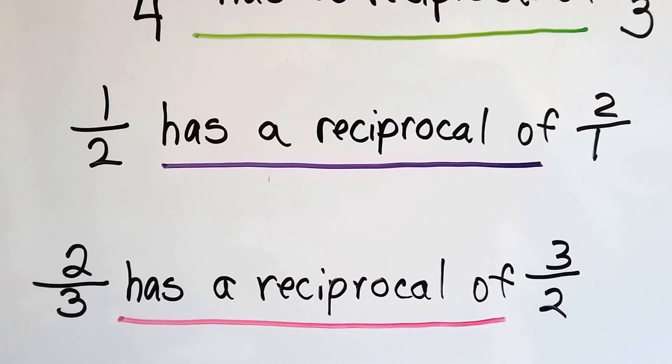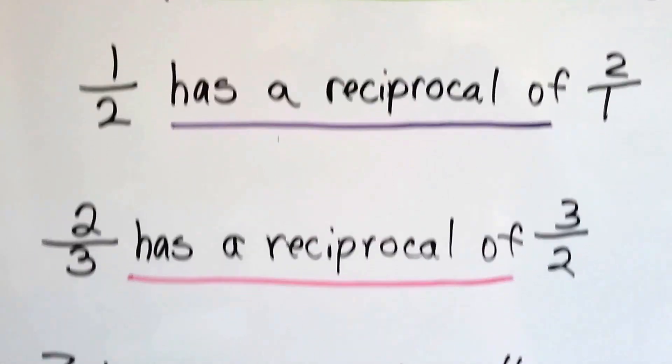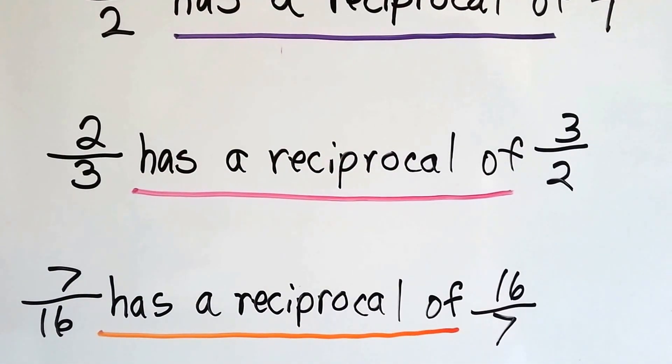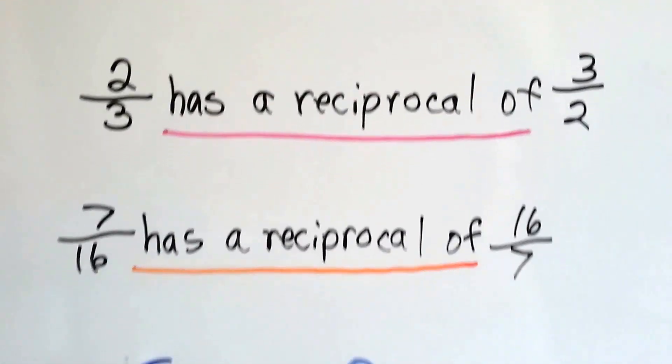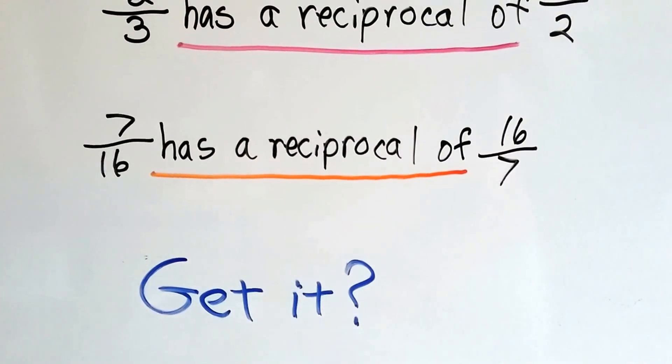Two-thirds has a reciprocal of three-halves. Seven-sixteenths has a reciprocal of sixteen-sevenths. It's just flipped upside-down, isn't it? Get it? That's a reciprocal.